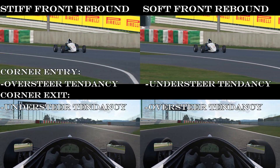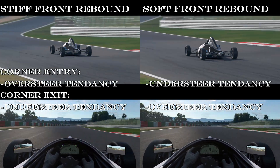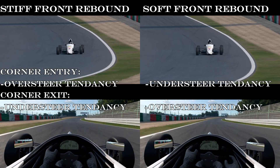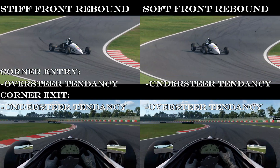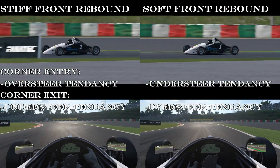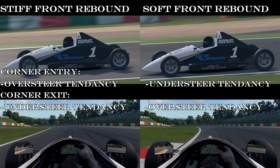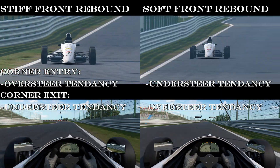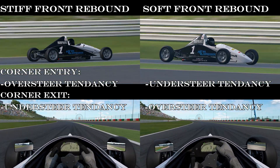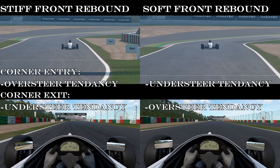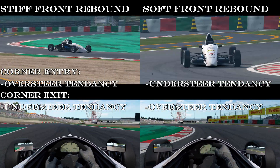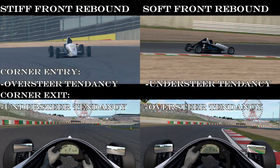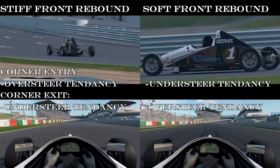Front rebound dampers will help you manage the car in the following ways: on initial turn-in and corner entry, a stiff front rebound damper will transfer load from the inside wheel, increasing load on the outside wheel, which will provide more cornering and a tendency to oversteer. Soft front rebound dampers will do the opposite — less load transferred to the outside tire means less grip potential and a tendency to understeer. On corner exit, stiff front rebounds will transfer load to the rears, providing an understeer effect. Soft front rebound dampers will transfer less load to the rear, keeping more in the front and providing more corner exit turning ability. So if your car is turning in too aggressively and understeering on exit, softer front rebound dampers could be in order.